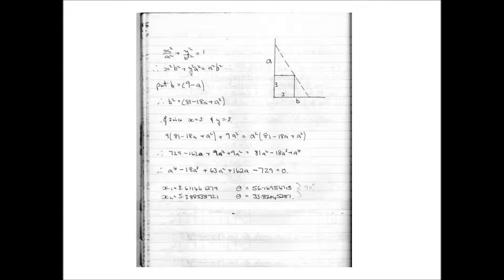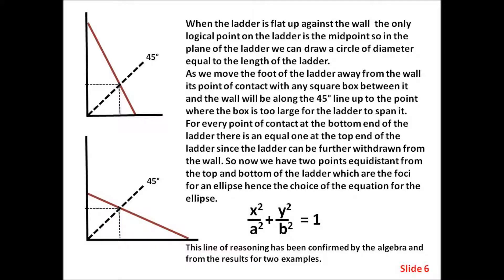When the ladder is flat up against the wall, the only logical point on the ladder is the midpoint, so in the plane of the ladder we can draw a circle of diameter equal to the length of the ladder. As we move the foot of the ladder away from the wall, its point of contact with any square box between it and the wall will be along the 45-degree line.